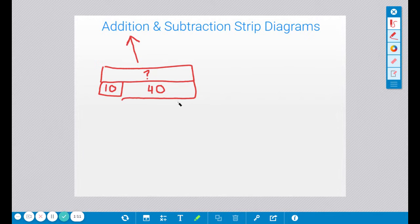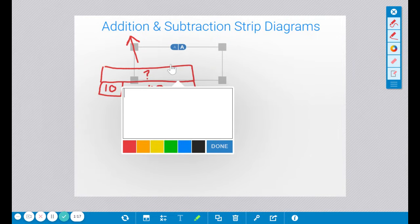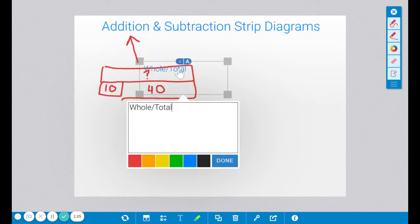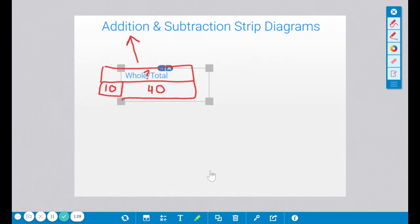So this strip diagram represents addition. As a matter of fact, we'll put that note there to remind ourselves that the top part is the whole, and the whole is also known as the total or the sum. So that is what this part is. This part will be the whole or the total. And that's why we don't know it because in addition, that's what you're trying to find, the whole, the total.